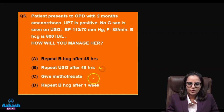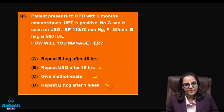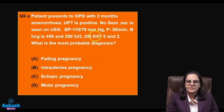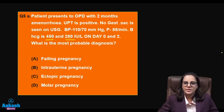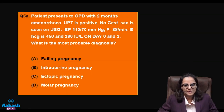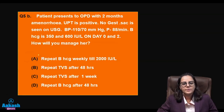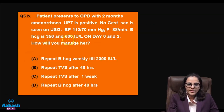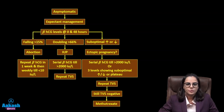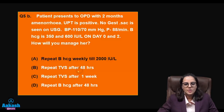Repeat beta-hCG after 48 hours is the correct answer for the management question. Next scenario: Day 0 value is 450 and Day 2 value is 280 — the fall is more than 15%, so the most likely diagnosis is abortion or failing pregnancy. Another scenario: Day 0 is 350 and Day 2 is 600 — beta-hCG has doubled by more than 66%, most likely an intrauterine pregnancy. Repeat beta-hCG weekly until it exceeds 2000.